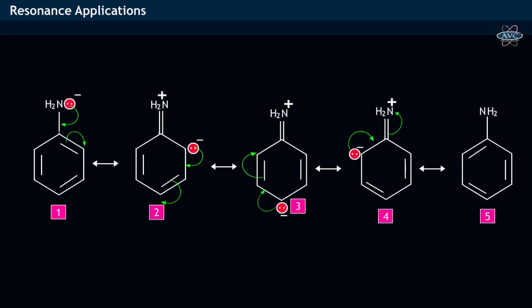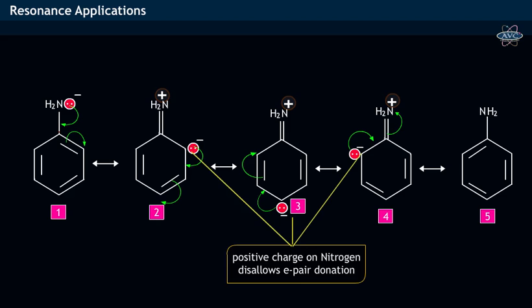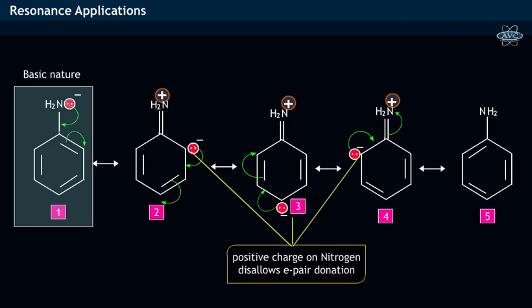In the resonance structures shown, it may be noticed that there exists a positive charge on nitrogen, which disallows the electron pair donation. That is, the basic nature of aniline is decreased.